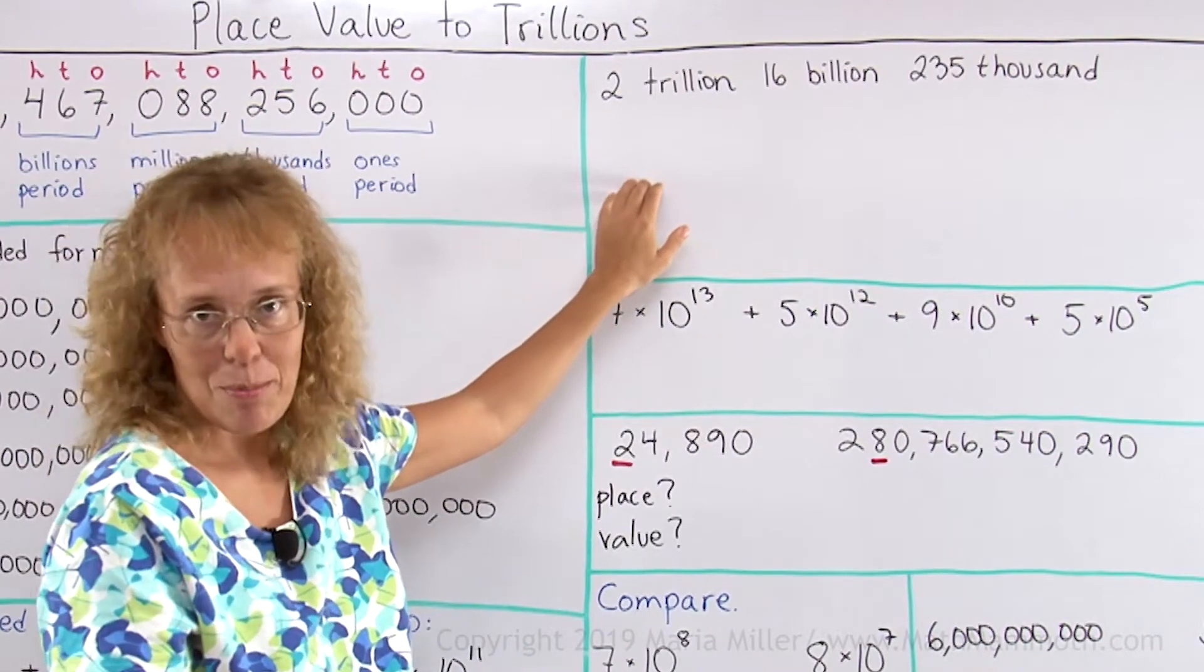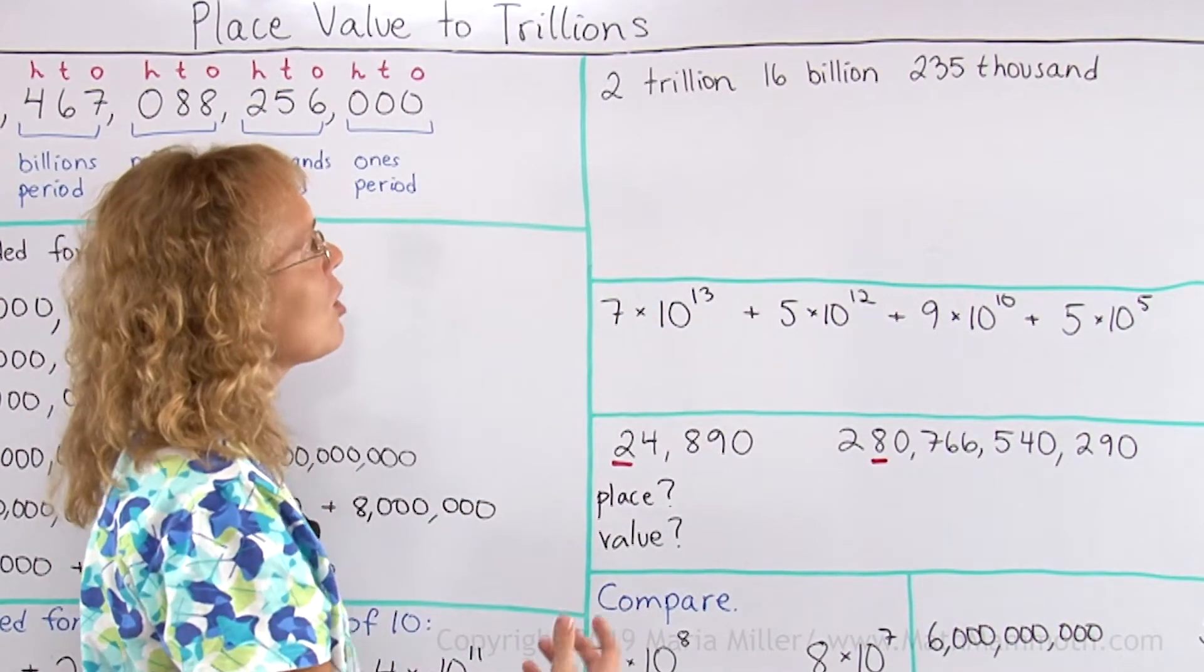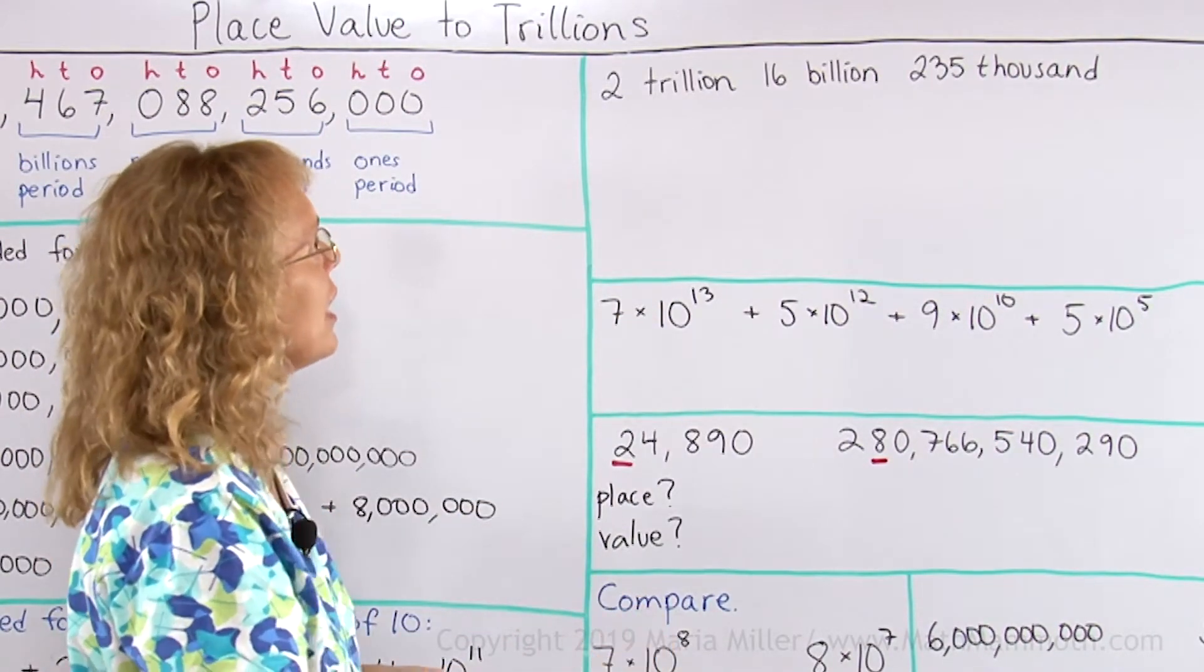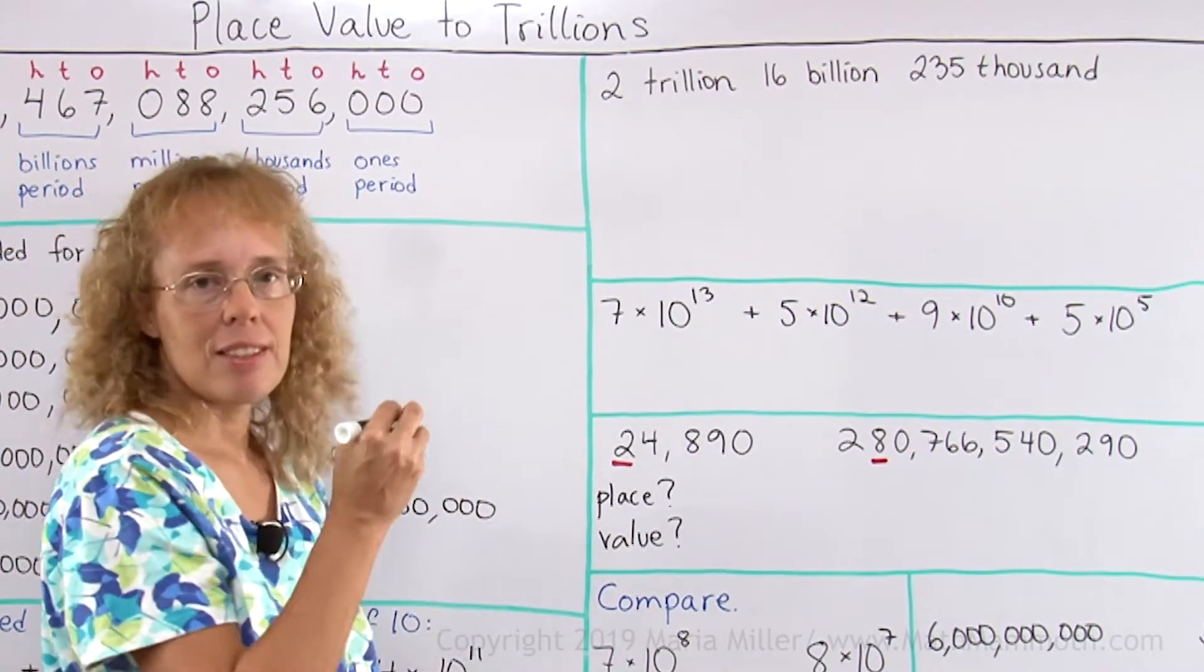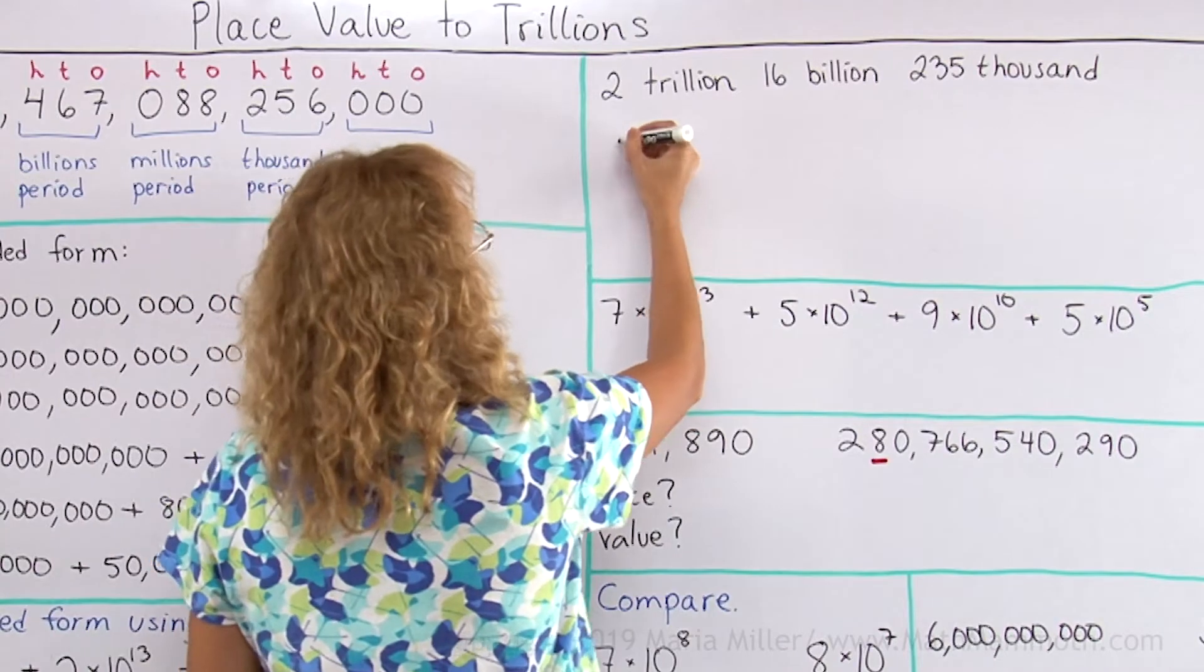Let's write this with numbers: 2 trillion, 16 billion, 235 thousand. It is trillions, so maybe you want to start out by just writing empty lines and commas.